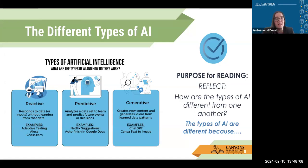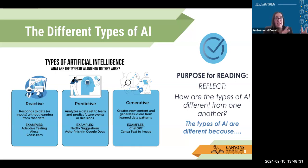We've seen reactive AI with adaptive testing. If you have Alexa, or if you've ever had your students play chess.com — that is reactive AI; it has coding built into it to support it. The next type is predictive AI, which analyzes data to learn and predict future events or make decisions — it looks at the data set and makes a decision based on that. Our last type is generative AI, which creates new content and generates ideas from learned data patterns. This is our ChatGPT — it generates new things, not just predicting, but actually taking that next step into the creative realm.